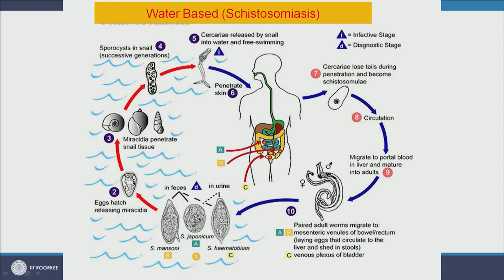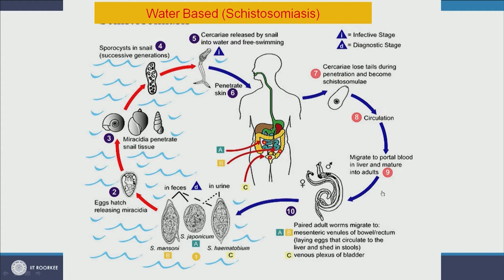Water-based diseases are diseases we can catch by merely coming in contact with contaminated water, and a typical example is schistosomiasis. In schistosomiasis, a human who has the disease releases the microbes through fecal matter and urine. These contain eggs which hatch and infect a snail, fulfilling part of their life cycle in the snail. The snail releases them, and they penetrate the human skin again, infecting the human. In the human body they undergo another part of their life cycle, mate, and release eggs.